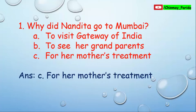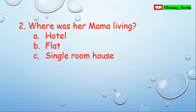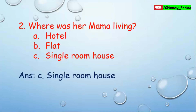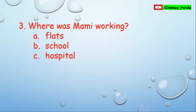Question number two: Where was her mama living? Option A: hotel. Option B: flat. Option C: single room house. Nandita's mama was a poor person; he used to live with his family in a single room house in a slum area. So option C is the correct answer.